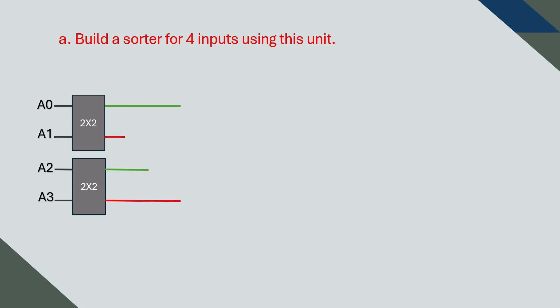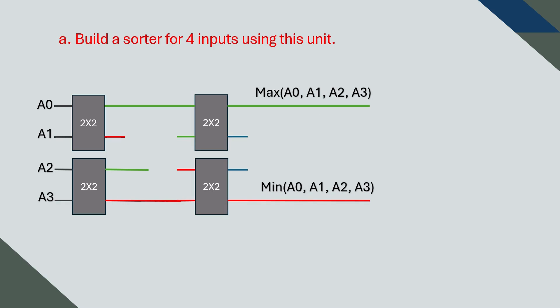Now we will take the two maximums and find the larger one. That will be the overall maximum. Similarly, we will take the two minimums and find the smaller one. That gives us the minimum of all four inputs. So now, we already know the highest and the lowest value among the four inputs.